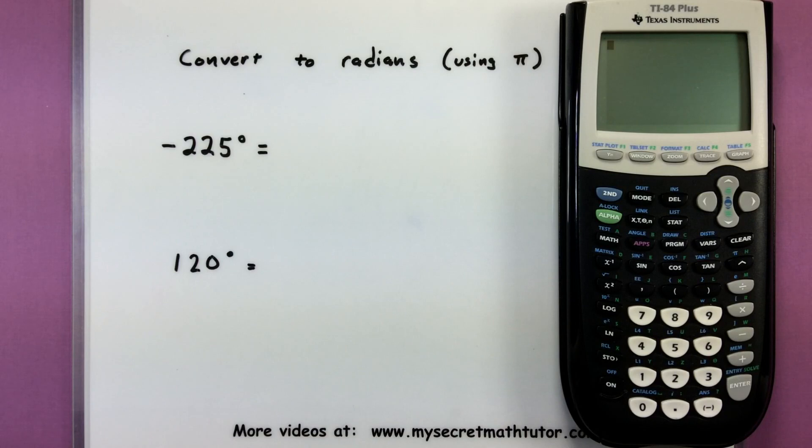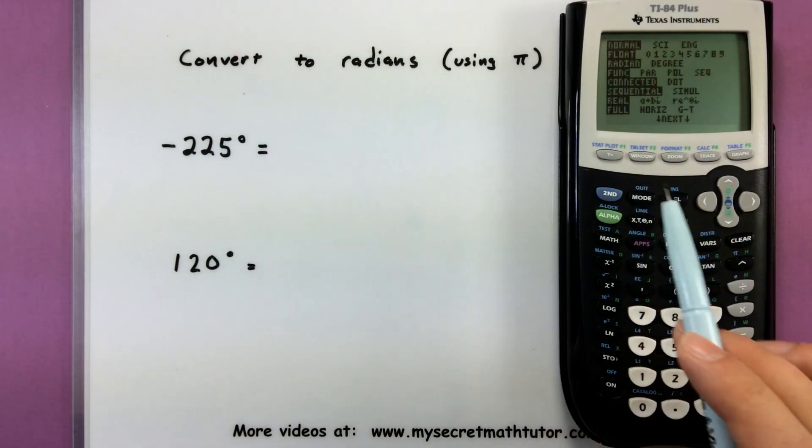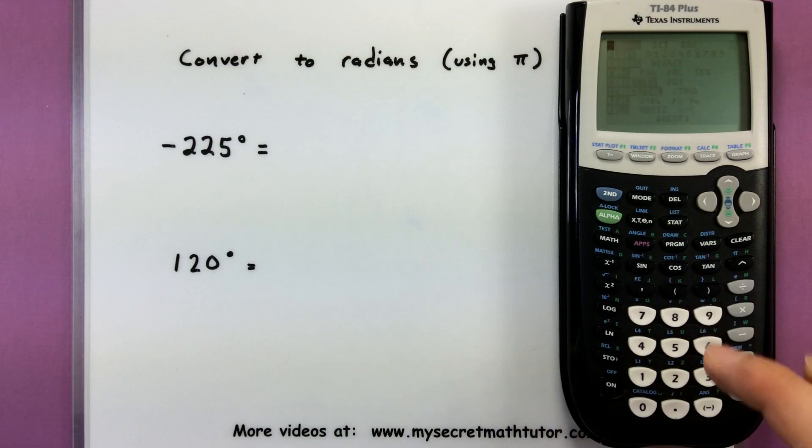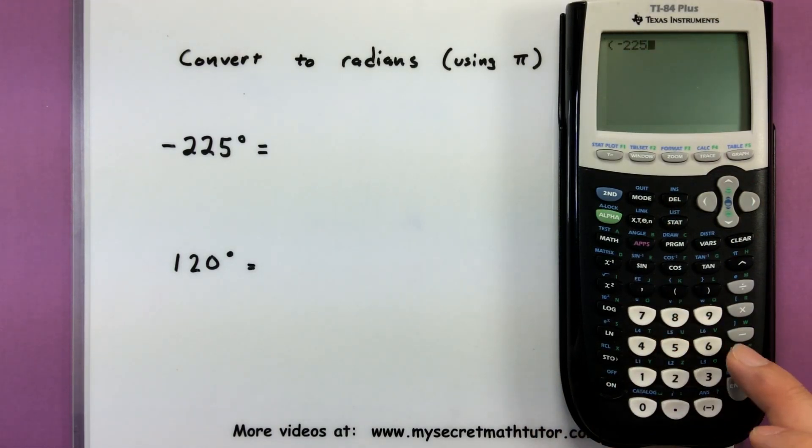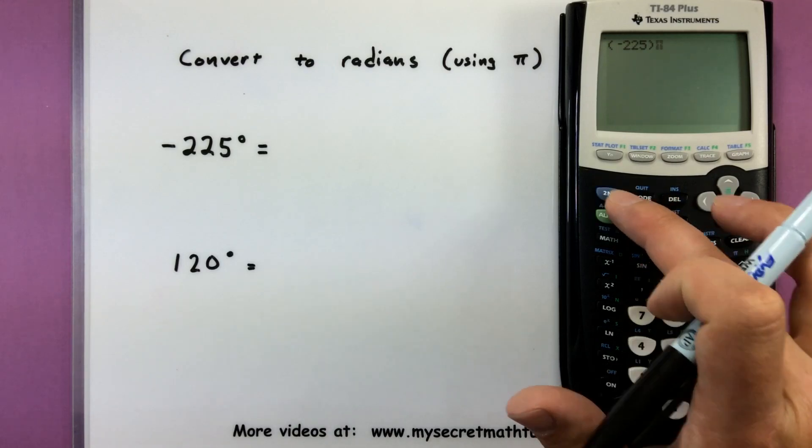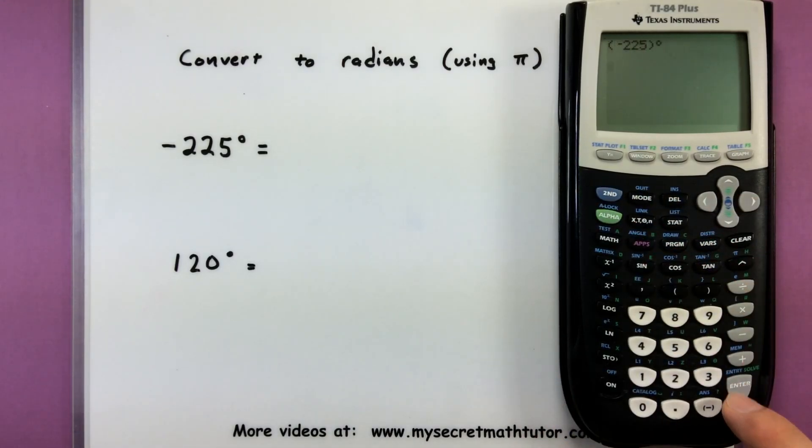And if I was to convert that into radians, I would get a value, a decimal, but I can also describe it using π a little bit cleaner. Let's see how that works. So I already have my mode properly set to radians. That's what we're turning things into. And I'm going to type in negative 225 and then give it the degrees. Second angle degrees. Enter.